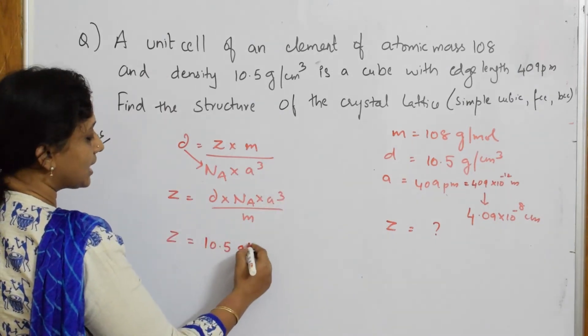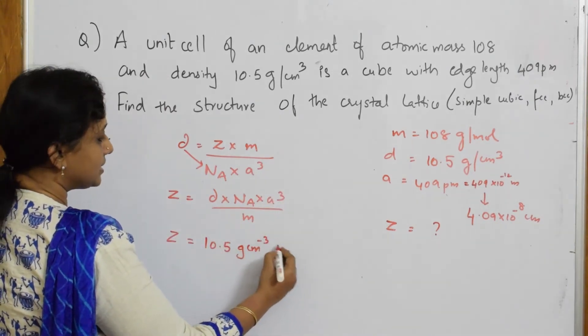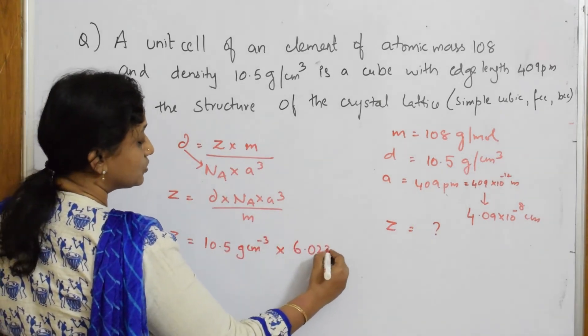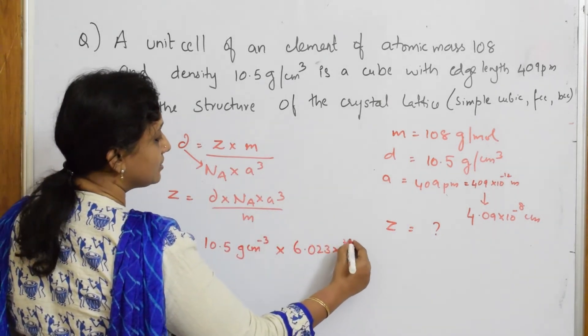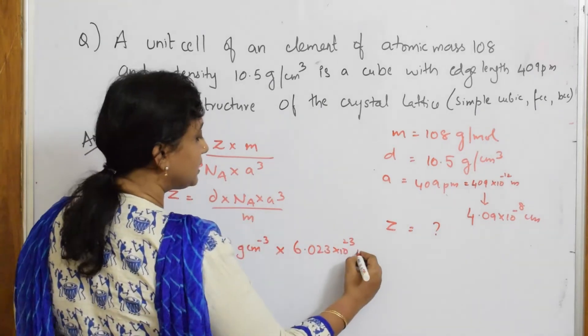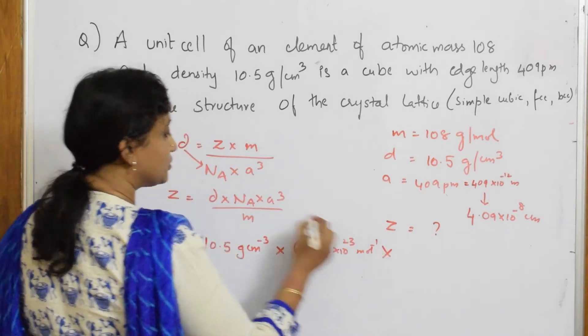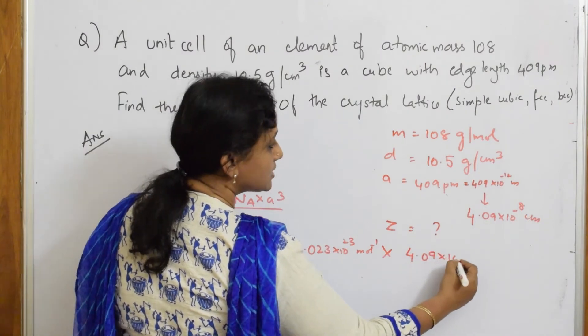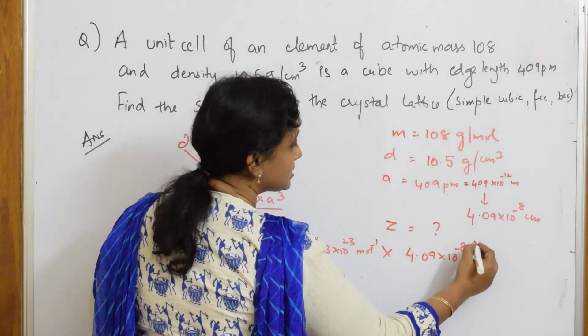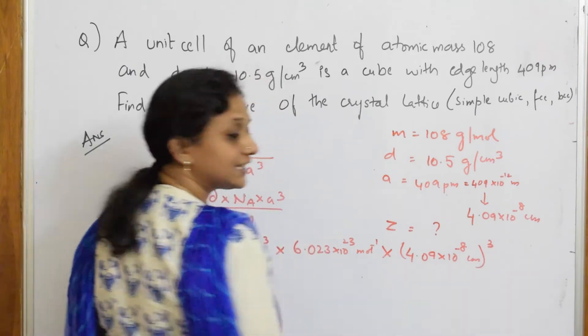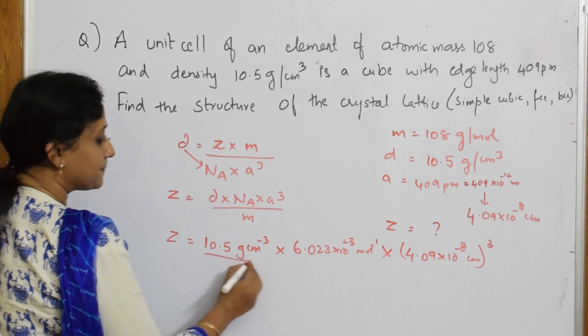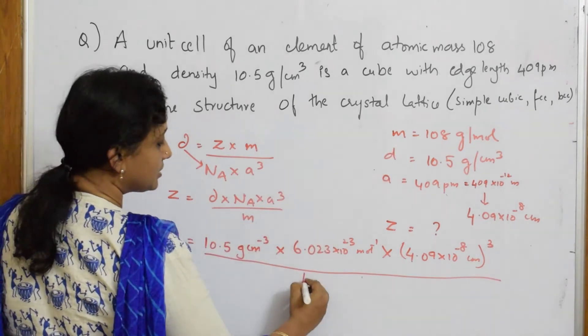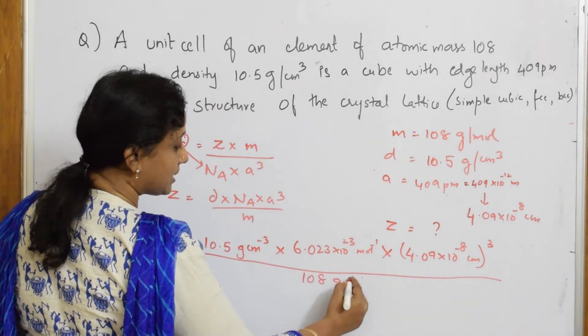Density is equal to gram centimeter minus 3 into Avogadro number. We very well know 6.023 into 10 raised to the power of 23 mole inverse into A cube. What did I get? 4.09 into 10 raised to the power of minus 8 centimeter cube. Yes. Divided by mass. What is mass given? 108 gram per mole.